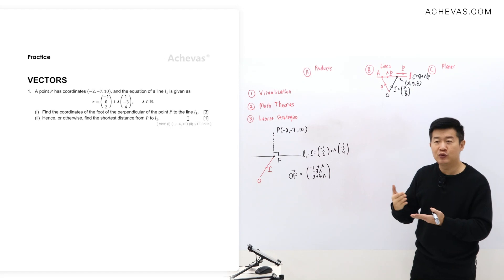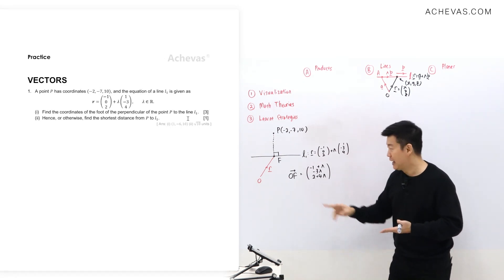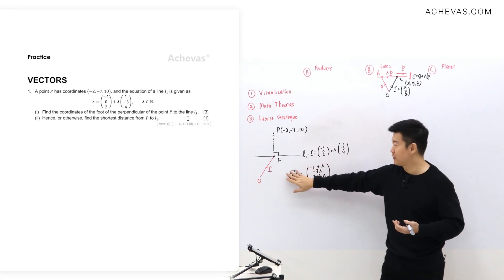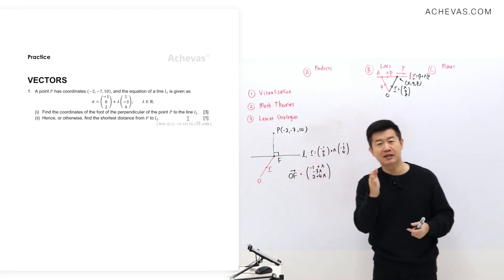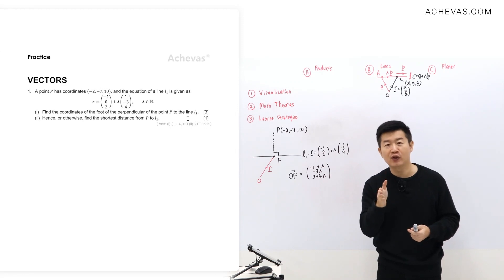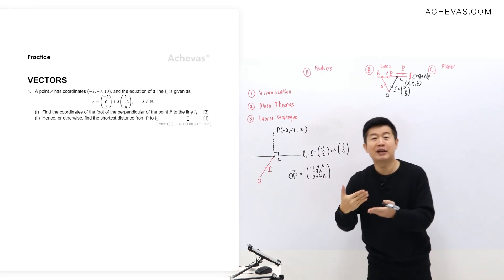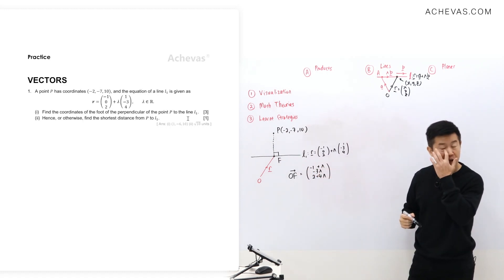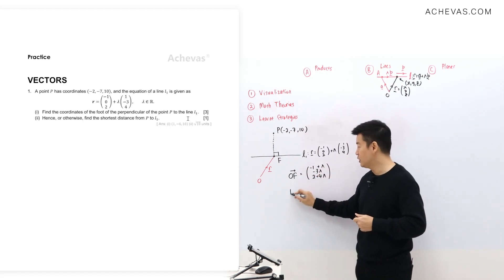And of course, if I were to depend on what I've visualized, F is not just any point that is on the line L1, or else I would have just used R. F is a special point, such that it is the foot of the perpendicular. So geometrically, PF is perpendicular to the line L1. So we do want to find PF.